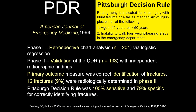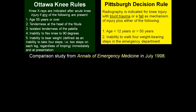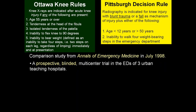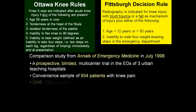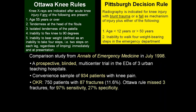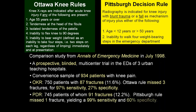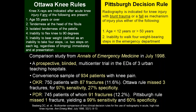A comparison study from Annals of Emergency Medicine July 1998 was a prospective, blinded, multi-center trial at three urban teaching hospitals with roughly 1,000 patients. The Ottawa knee rule — applied to 750 patients — found 87 fractures but missed three, for 97% sensitivity and 27% specificity. The Pittsburgh Decision Rule — applied to 745 patients — found 91 fractures and missed only one, making it 99% sensitive and 60% specific.